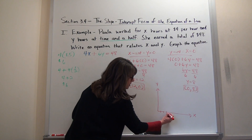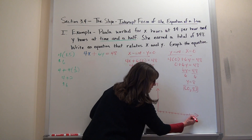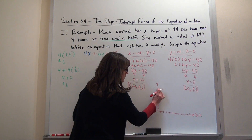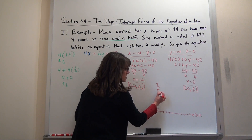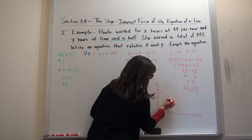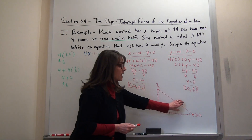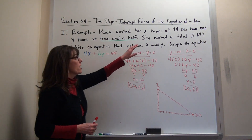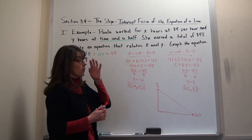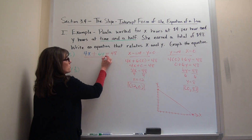Plotting the point (12, 0) on the x-axis and (0, 8) on the y-axis gives us the two points needed to draw the line. Remember, this line shows every combination of straight time hours and overtime hours that allows Paula to make $48. Every single point on that line will satisfy the equation 4x + 6y = 48.